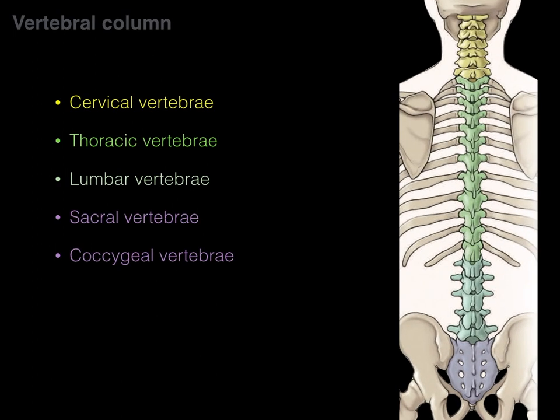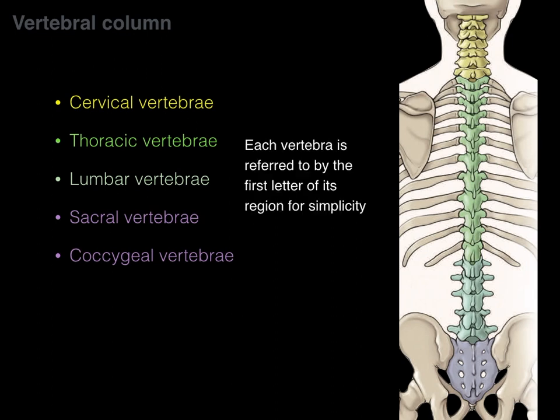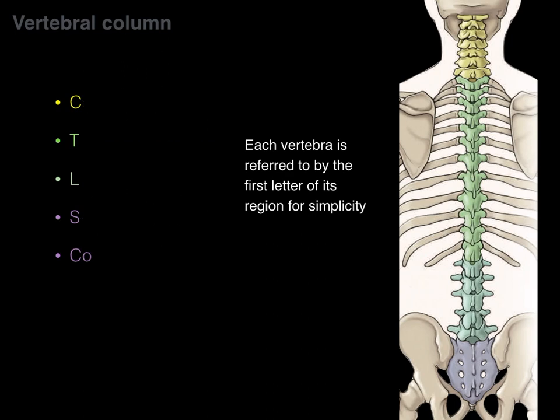If we zoom in a little bit more, we see them now color-coded. There are 33 total vertebrae within the vertebral column that are segmentally organized, cervical at top down to the coccygeal at the bottom. Each vertebra is referred to by the first letter of its region. So the fourth cervical vertebra is simply called C4.